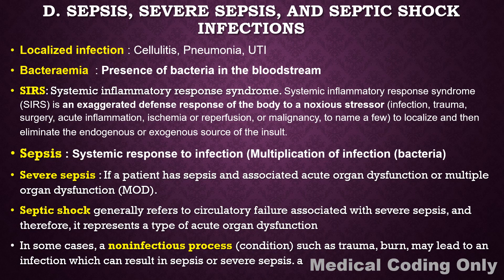Sepsis is when bacteria or viruses from a localized infection convert to a blood infection — that is the sepsis stage. Blood infection with organ dysfunction is severe sepsis. For example, acute kidney failure or respiratory failure. If there is hypotension or circulatory failure, that is septic shock.